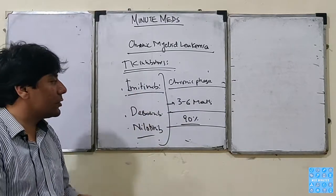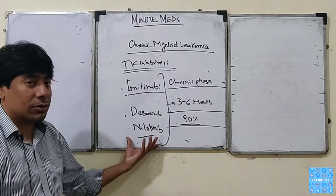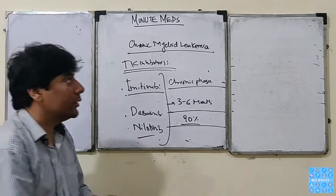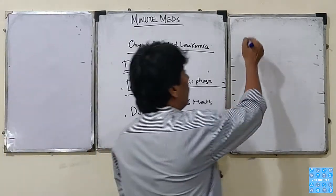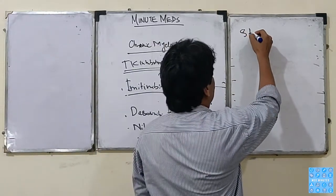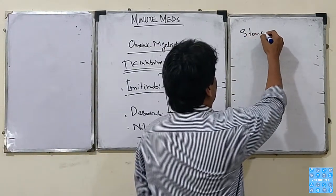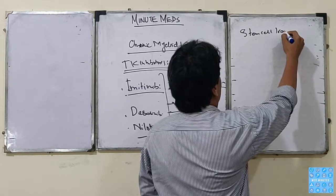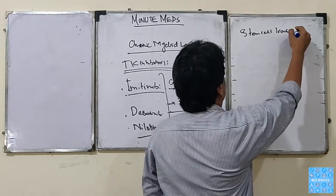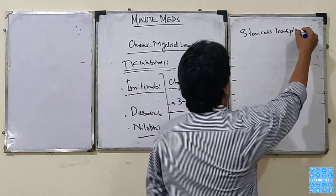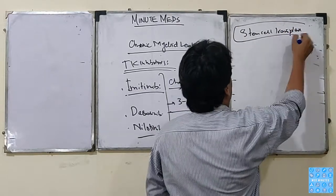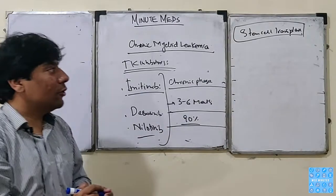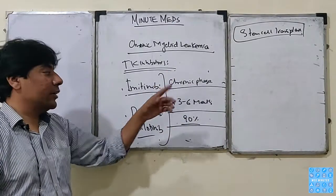Those who don't respond to the first-line drug imatinib — then we go to the second line, such as dasatinib or nilotinib. In case both don't work, then we have the option of stem cell transplant. Remember that stem cell transplant is not the first line — it is the second line.